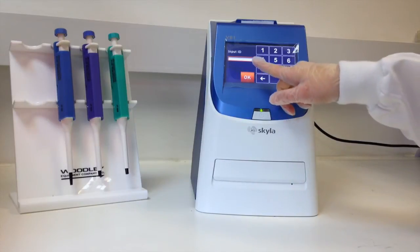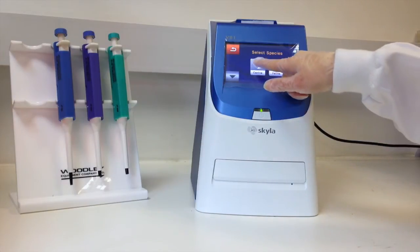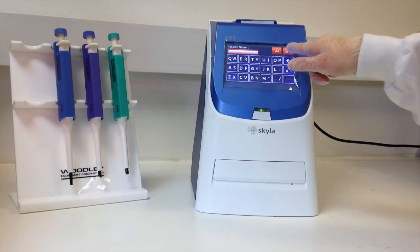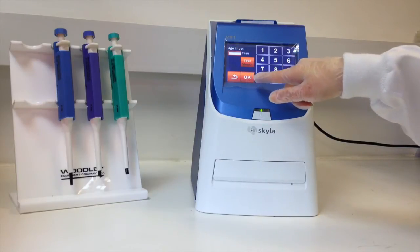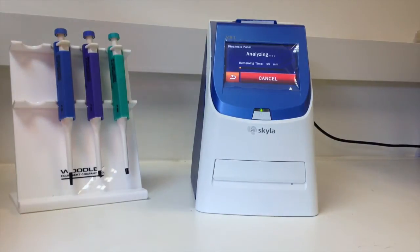Use the touchscreen to enter the patient ID or scan the patient ID using the optional external barcode scanner and press OK. Select the species followed by the patient name. Depending on your analyzer settings, you may also enter gender, age, and weight.